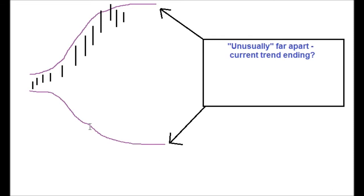As a general rule, if the price touches the top of the Belinga Bands, things are considered a little bit too overextended on the upside. And when the bands are unusually far apart, it can be a signal that the trend is ending. So you've had your move, the bands are very far apart, and now the market is starting to look for what to do next — it can be a signal that the trend is on its way out.